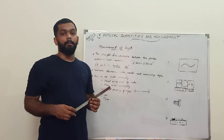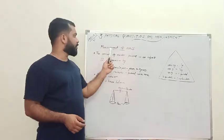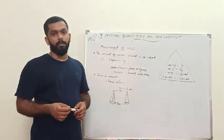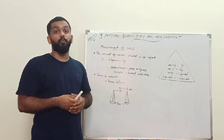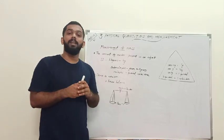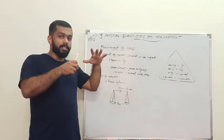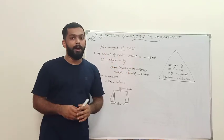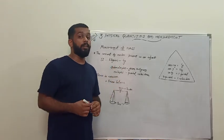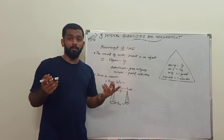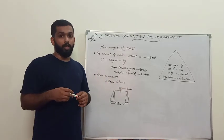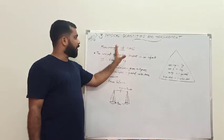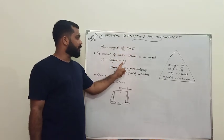Now we are going to discuss about measurement of mass. We commonly use the word 'weight', but in physics, mass and weight are two different quantities. Weight is the force by which the Earth attracts our body toward its center, while mass is the amount of matter present in an object. The SI unit of mass is kilogram, represented by the small letters 'kg'.